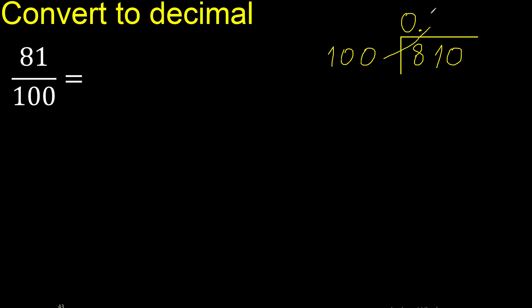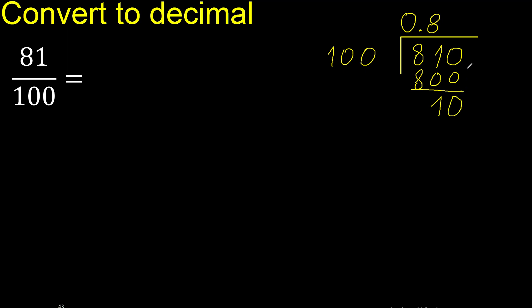Therefore, 100 multiplied by which number is nearest to 810 but not greater — multiplied by 9 is 900, which is greater. Multiplied by 8 is 800. Subtract to get 10. There is no next number, therefore complete.